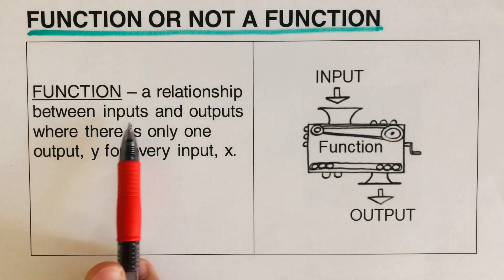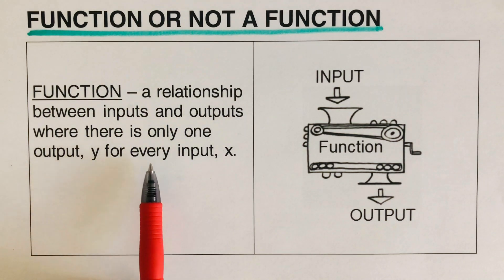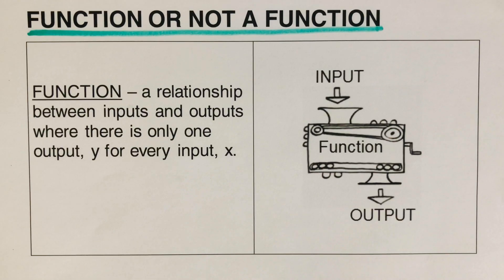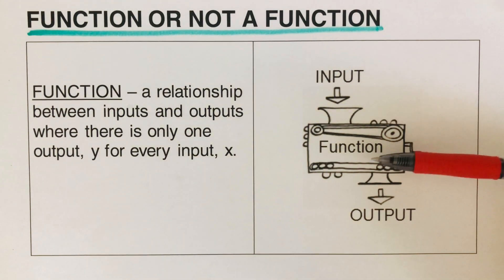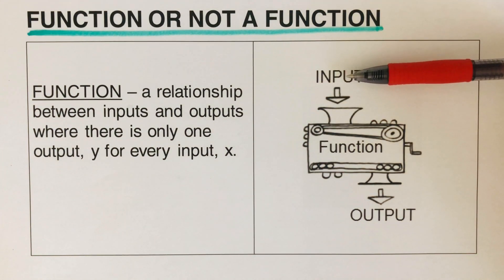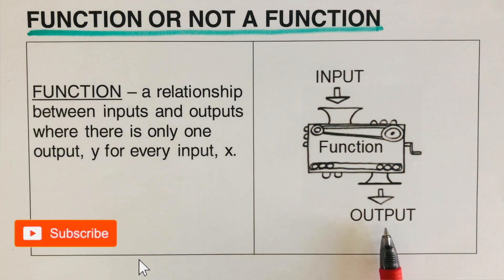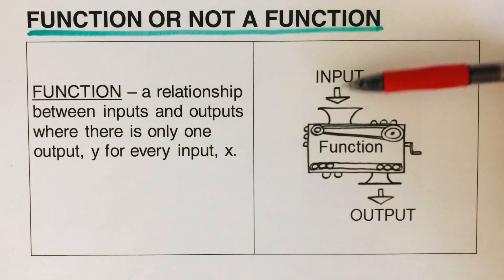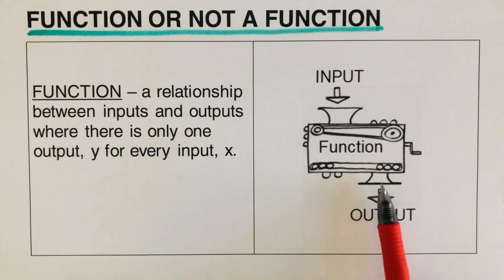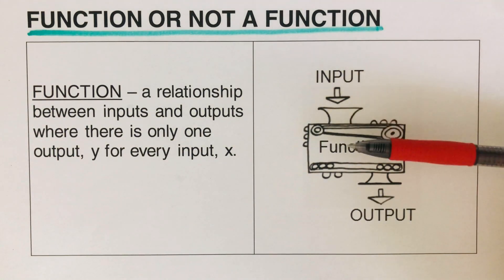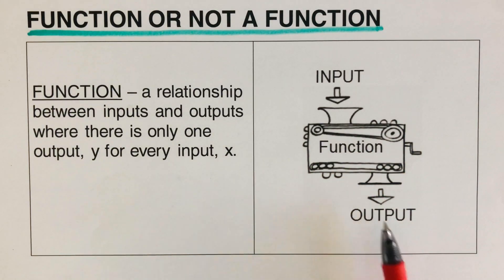A function is a relationship between inputs and outputs where there is only one output y for every input x. That means for every x value there's always that one unique output which is y. To better understand this, I have here a function machine. This machine is called a function if and only if I put in a value — which we call the input — and it drops only one output. If I drop in one input and the machine produces two outputs, this is not a function, because a function should only produce one output. Each input should produce only one unique output.